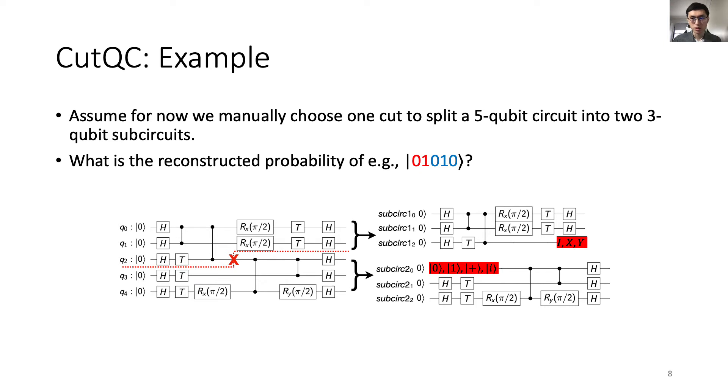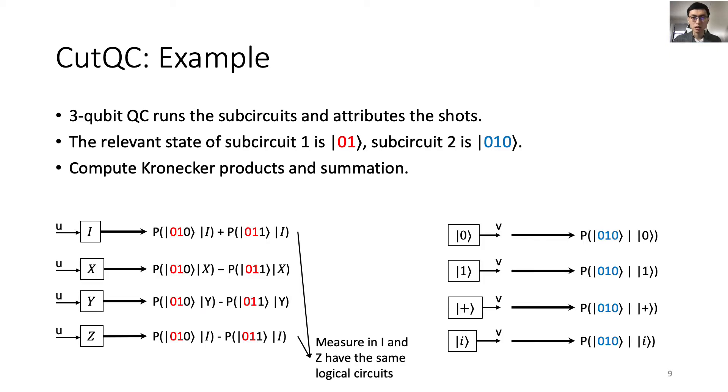Back to the same example circuit. Assume for now we manually choose one cut as indicated by the red cross. What is the probability of the state, say 01010? After running the small sub-circuits on a 3-qubit QC, the relevant state of sub-circuit 1 is 0-1 and sub-circuit 2 is 0-1-0. Note that measuring I and Z bases correspond to the same logical circuit, and hence only three upstream sub-circuits are actually executed. The collection of these sub-circuit probabilities is part of the quantum device runtime, which is negligible compared to the entire end-to-end runtime. With these sub-circuit probabilities, the uncut probability for the state can be classically computed. Other quantum states are computed similarly, just with their corresponding sub-circuit states.